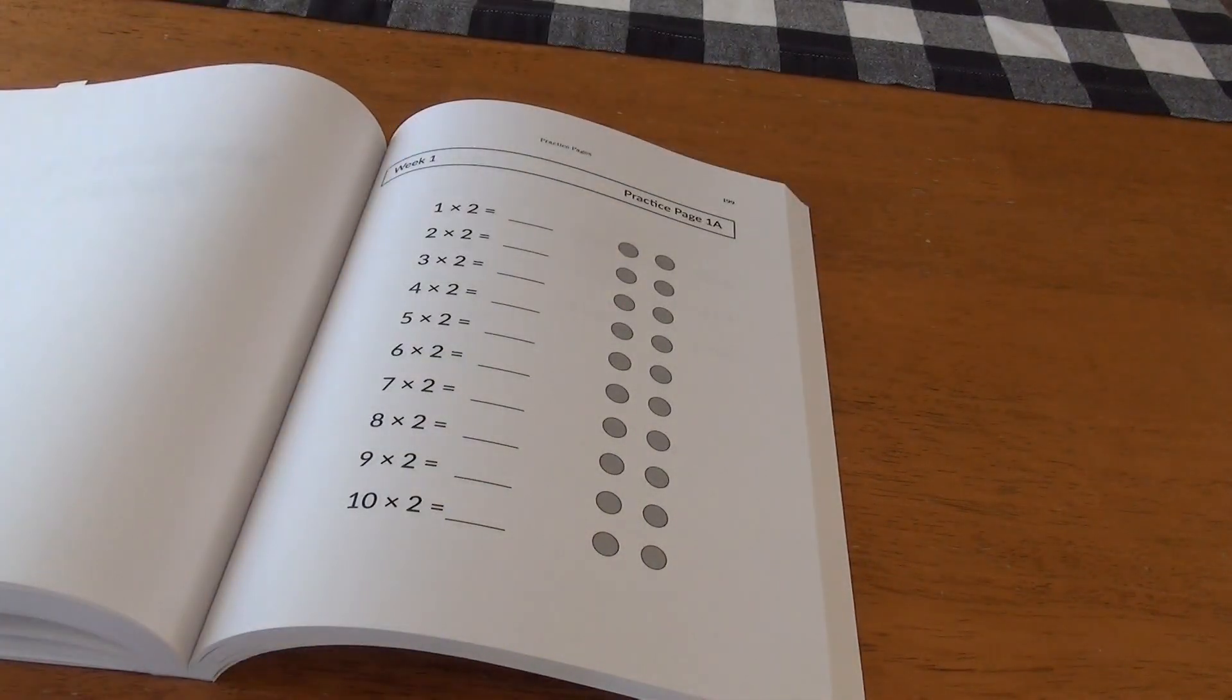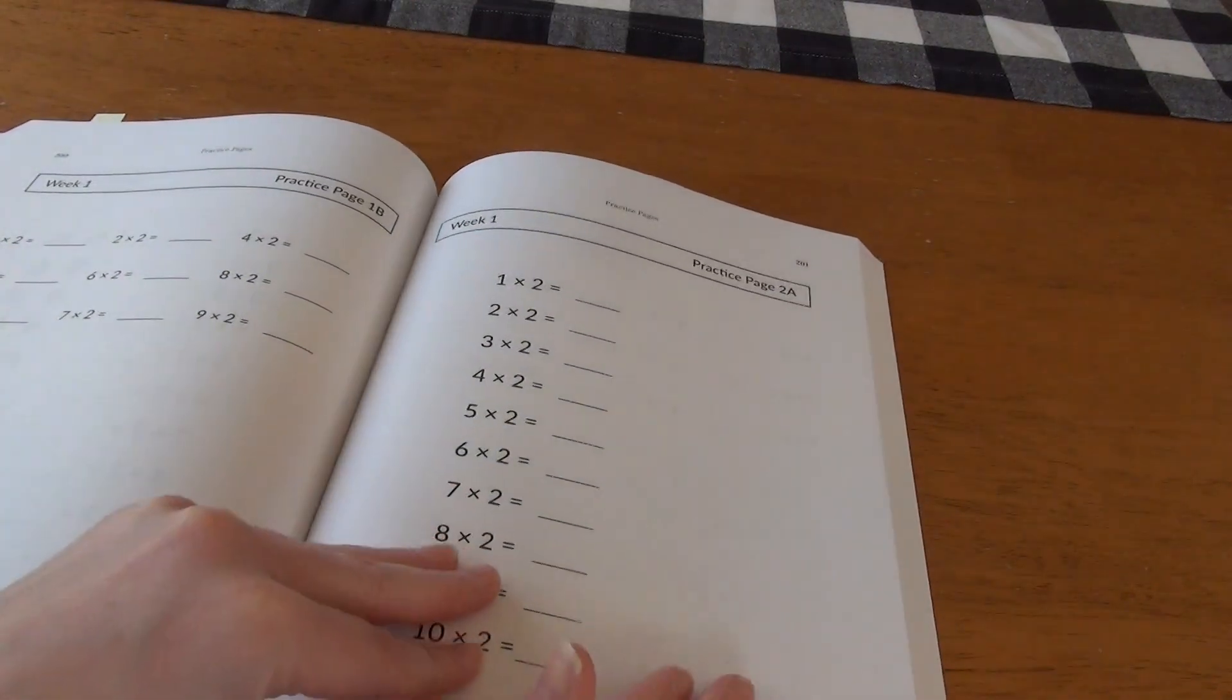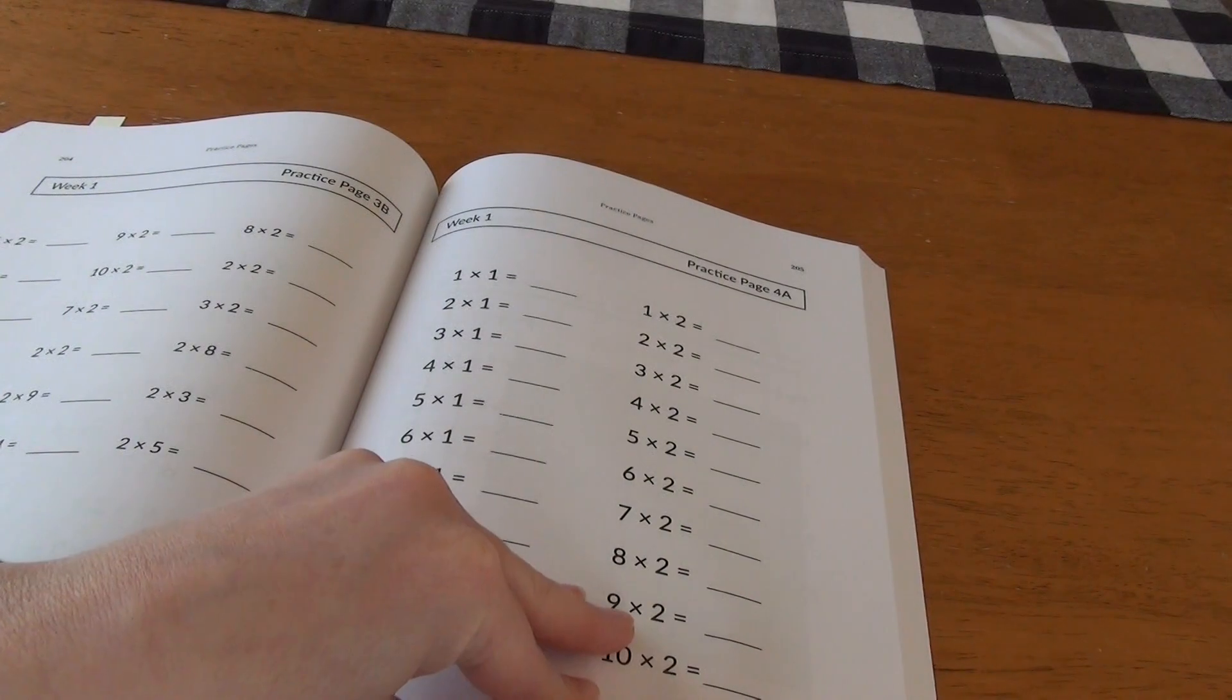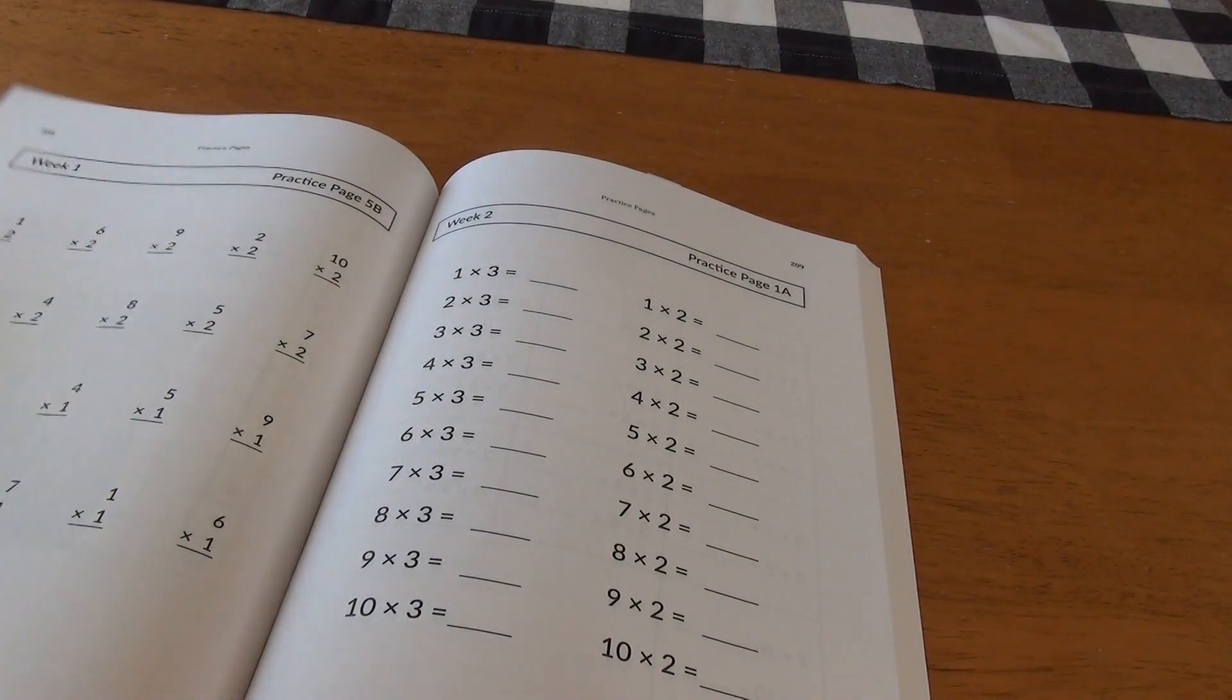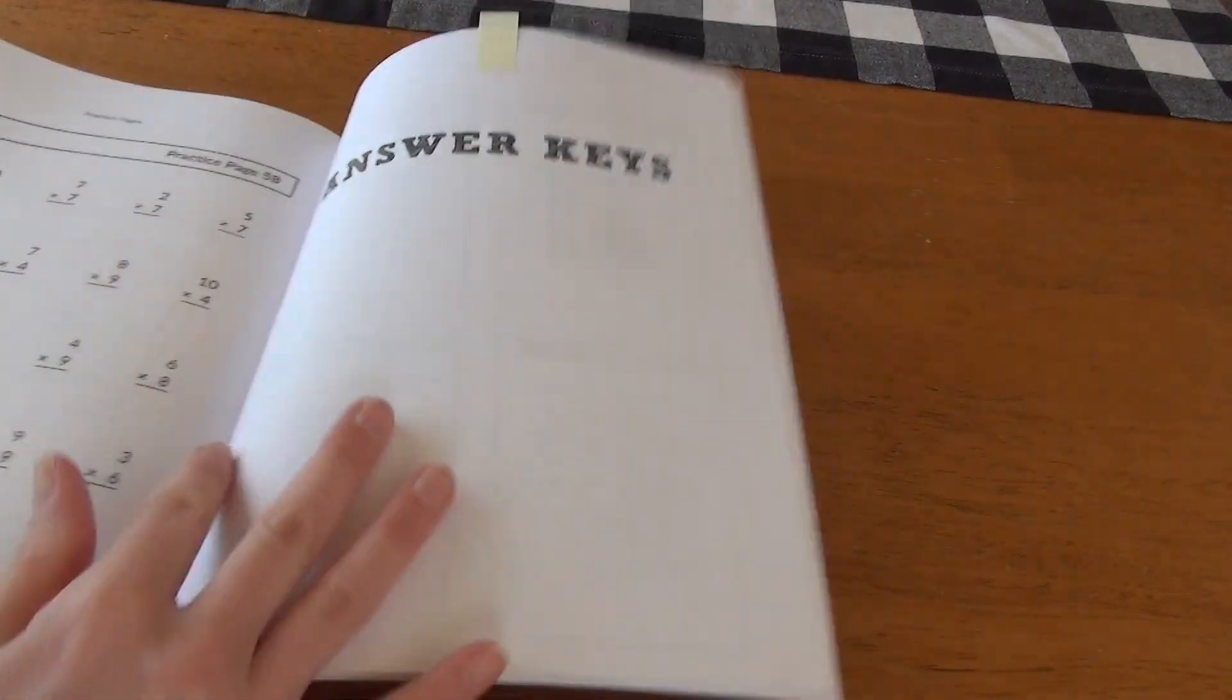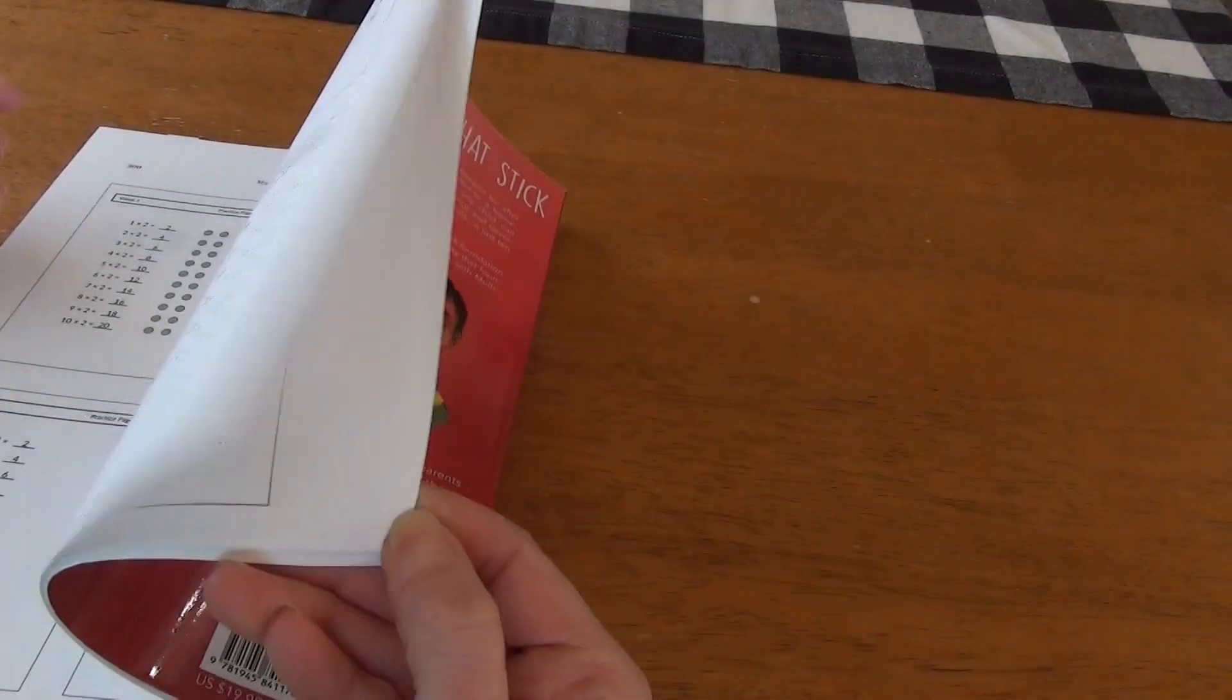Then the next section is our practice pages. And again, for each week, you have different practice pages. So week one, we have practice page 1A, 1B, 2A, 2B. So it looks like we have two pages of practice for each day for that week. And then you move on to week two, and it follows the same setup. Again, quite a few practice pages, as you can see here, all ready for you in the back of the book. And then for easy grading, we have the answer key in the back where you have a miniature version of the practice sheet with the answers.